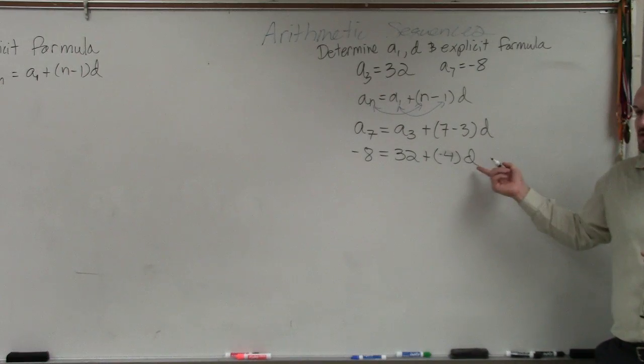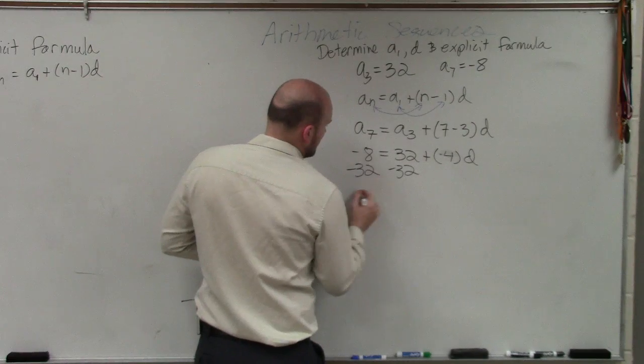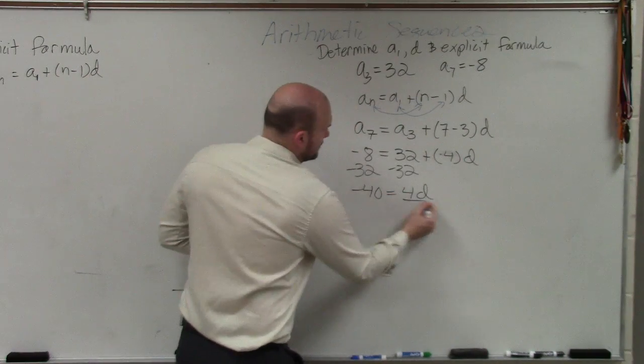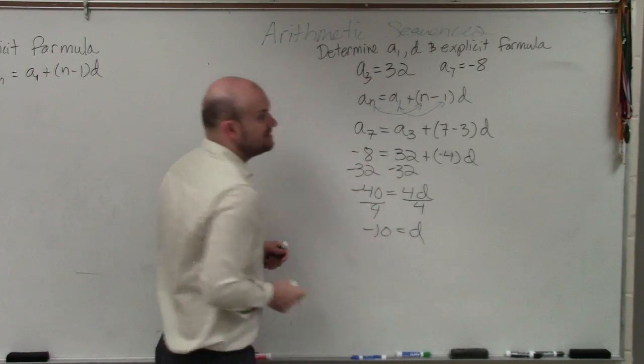Now, I just solve for d. So I subtract 32. I get negative 40 equals 4d. Divide by 4, divide by 4, negative 10 equals d.